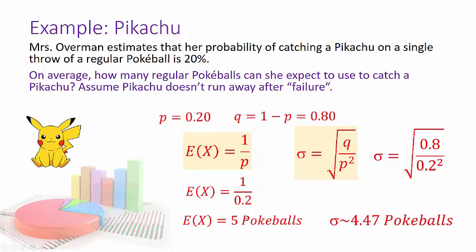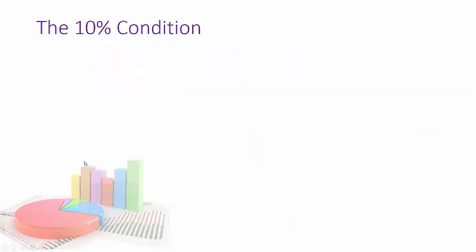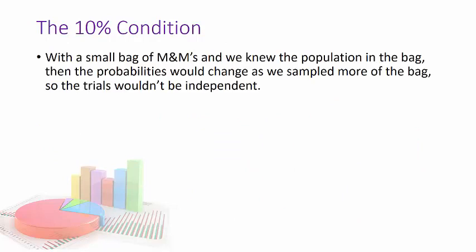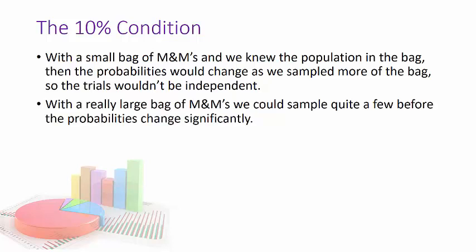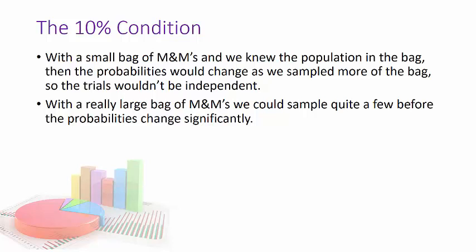The 10% condition rule applies when using Bernoulli trials. With a small bag of about 25–30 M&Ms, if you haven't gotten any speckled ones yet, the probability of getting one next increases as you remove M&Ms — so they aren't truly independent. But with a very large bag, you can sample quite a few before probabilities change significantly. Bernoulli trials must be independent, but it's still okay to use the model as long as the sample is smaller than 10% of the population.